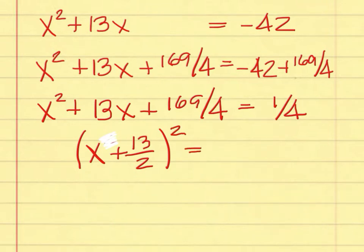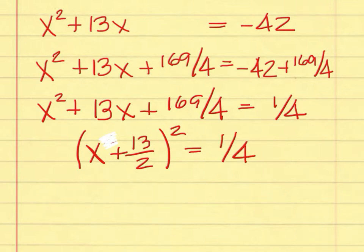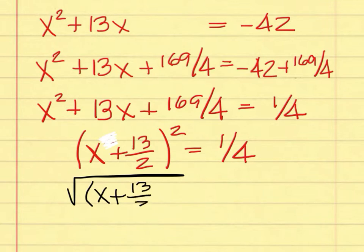What goes on the right-hand side? A student answers: 1 over 4. One-fourth is right. What do we do to both sides? Find the square root. So I need the square root of the quantity squared of x plus 13 over 2, and the square root of 1 over 4.